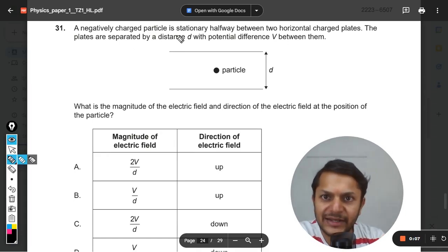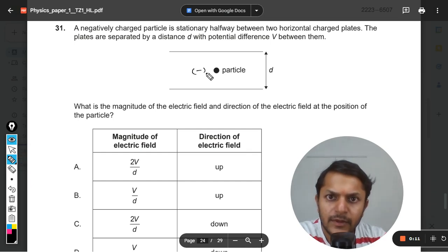A negatively charged particle is stationary halfway between two horizontal charged plates. The plates are separated by a distance d with potential difference V between them. What is the magnitude of electric field and the direction of the electric field at the position of the particle?